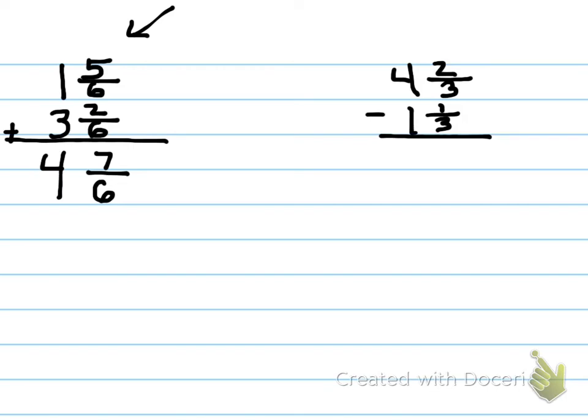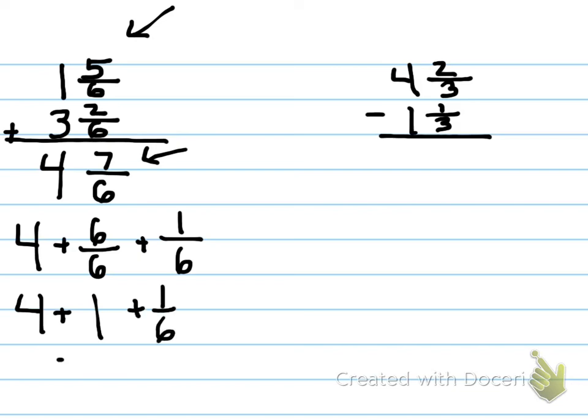Now we're left with 4 and 7/6. I bet you notice that this is an improper fraction, so we're not going to leave it like that. We're going to rewrite it. So we'd add 4 plus 6/6, because we have 6/6, and we have an extra sixth to make it 7/6. So when we write that, 6/6 is the same as 1 whole, plus 1 more sixth. So our final answer would be 5 and 1/6.